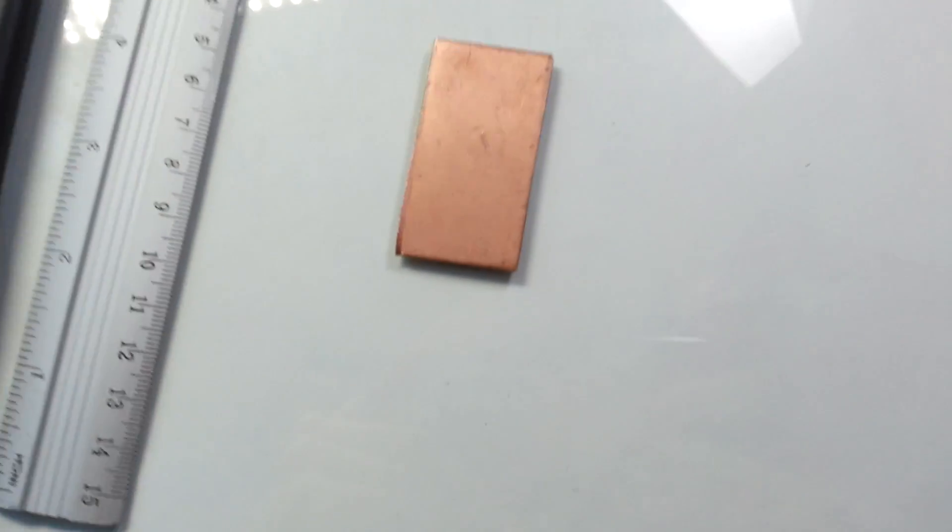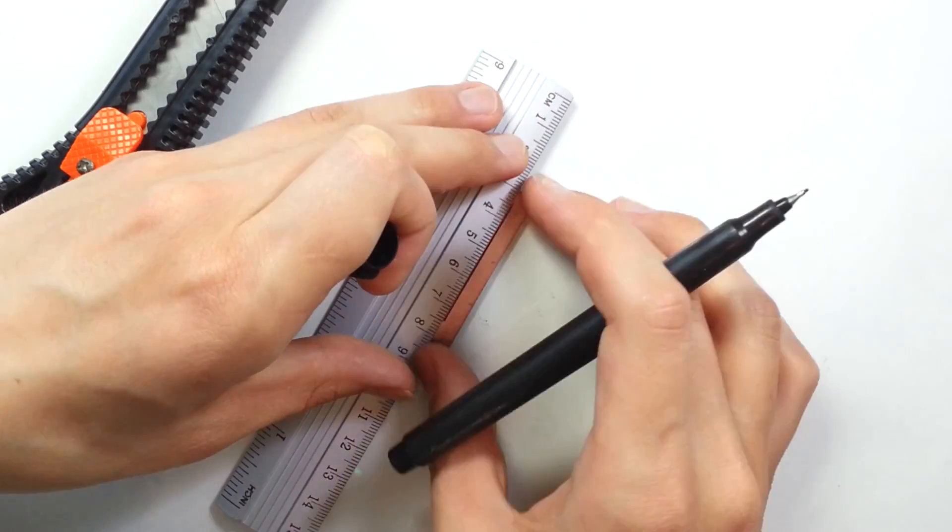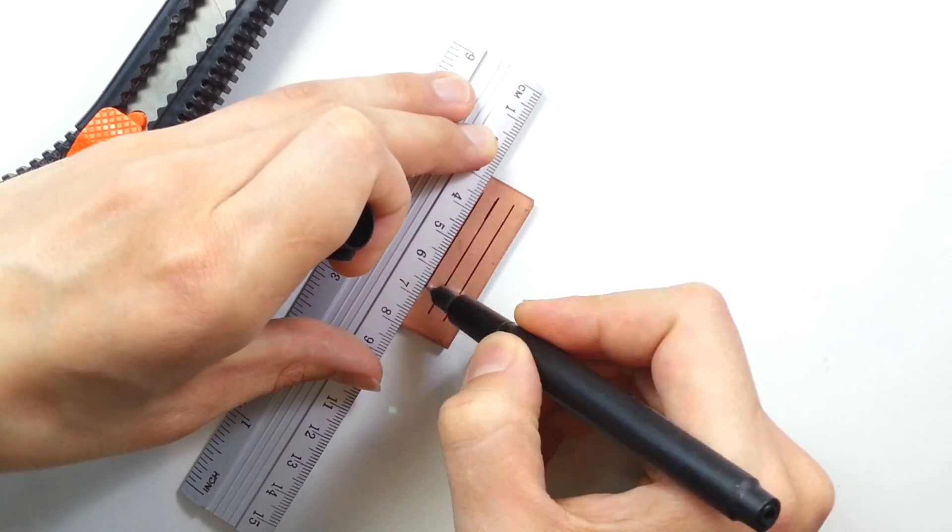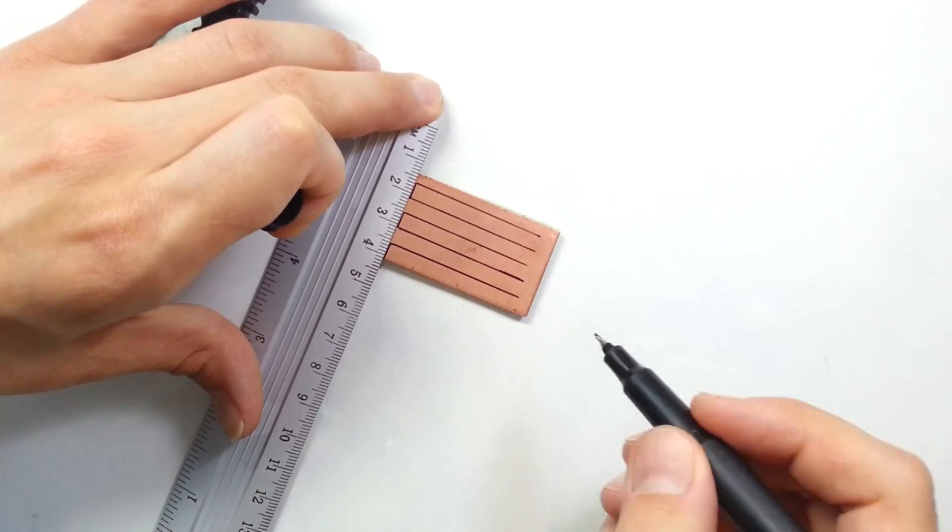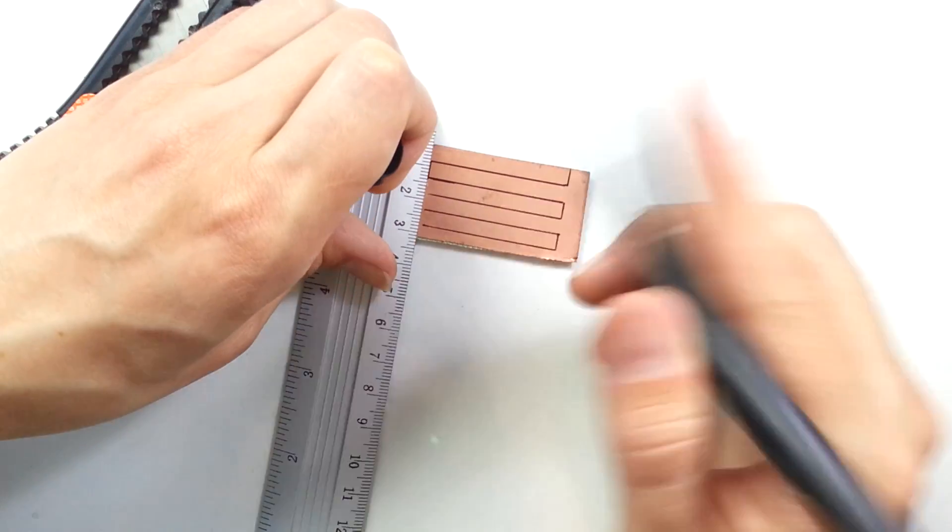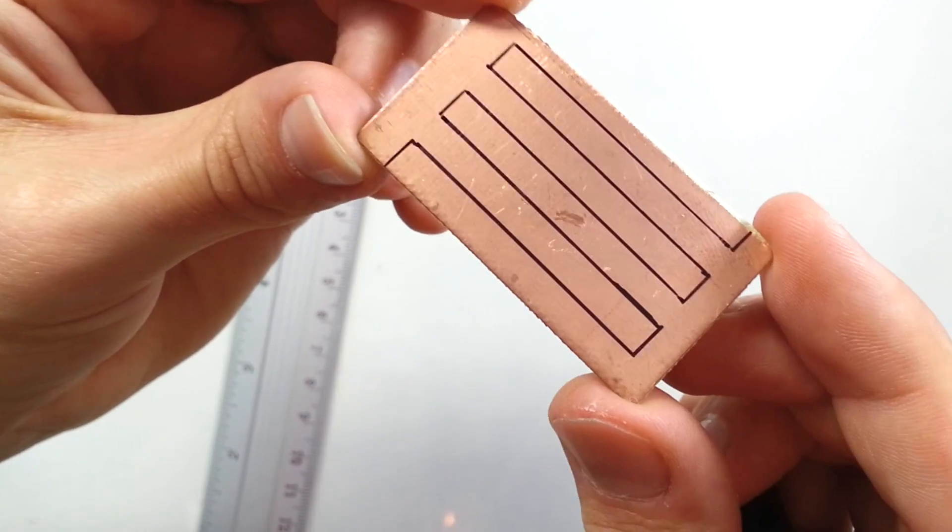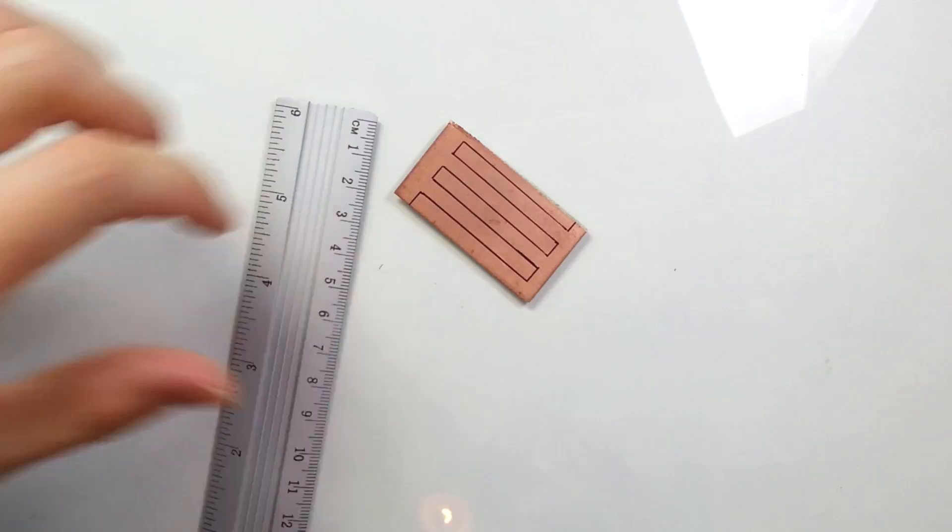Now I'm going to show you how to make a raindrop sensor from a PCB board. First let's leave marks where we should cut the copper layer. Now let's start cutting.